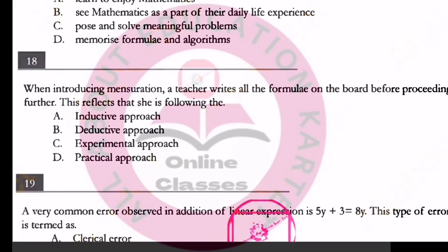In the deductive method, you start from a general rule or formula and move to specific examples. In the inductive method, you start from specific examples and derive the general rule. So inductive is example to rule, deductive is rule to example.